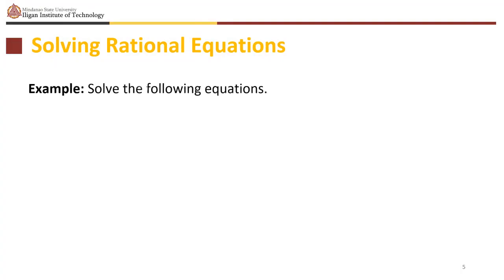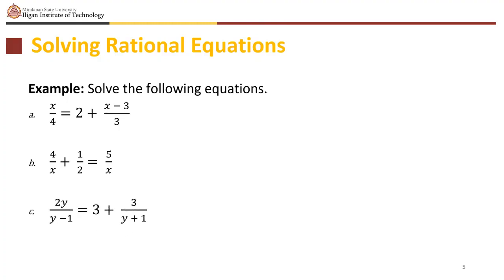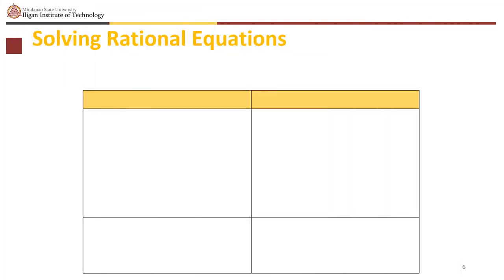We have the following examples in solving rational equations: x over 4 equals 2 plus (x minus 3) over 3; 4 over x plus 1 half equals 5 over x; and 2y over (y minus 1) equals 3 plus 3 over (y plus 1). Let's solve the first one: x over 4 equals 2 plus (x minus 3) over 3.